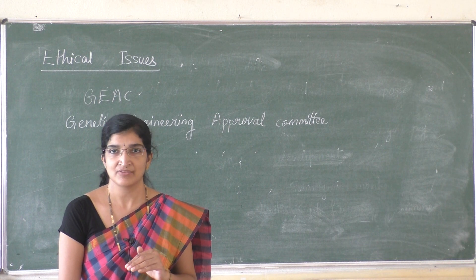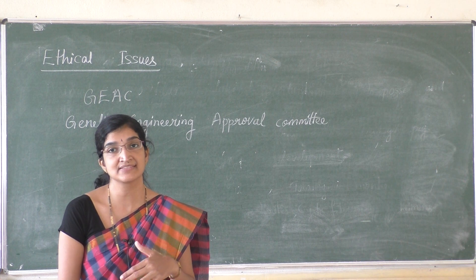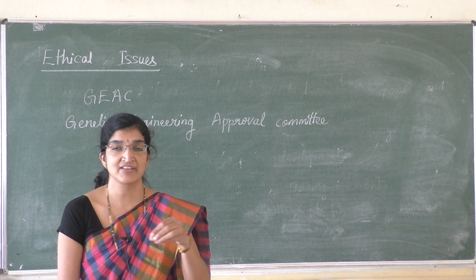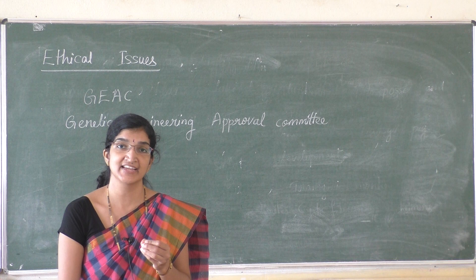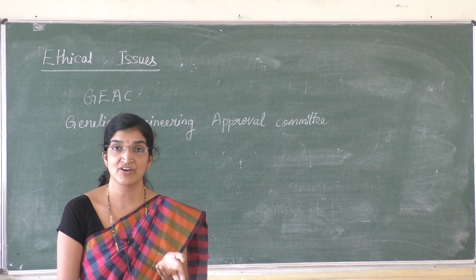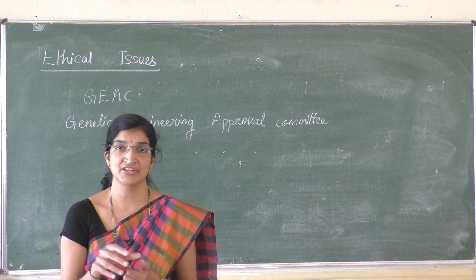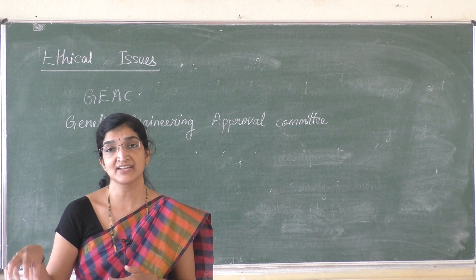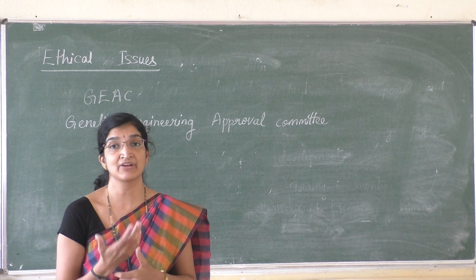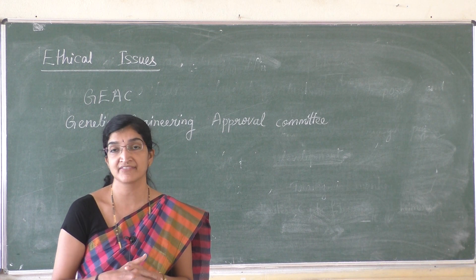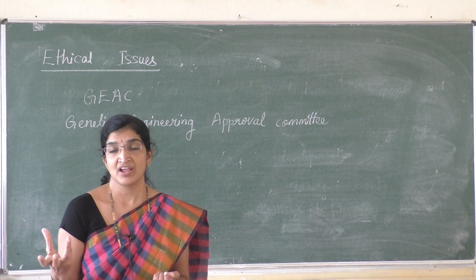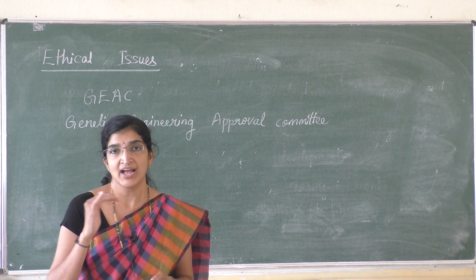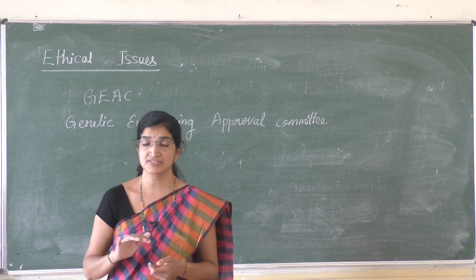Certain times, genetically modified organisms may compete with the natural organisms living in a particular area. Competition occurs between the genetically modified organism and the organisms already present in that ecosystem. In such conditions, the organisms originally present there may become extinct, because genetically modified organisms are resistant to different types of diseases and different environmental conditions. Due to that, the originally present organisms may go extinct.